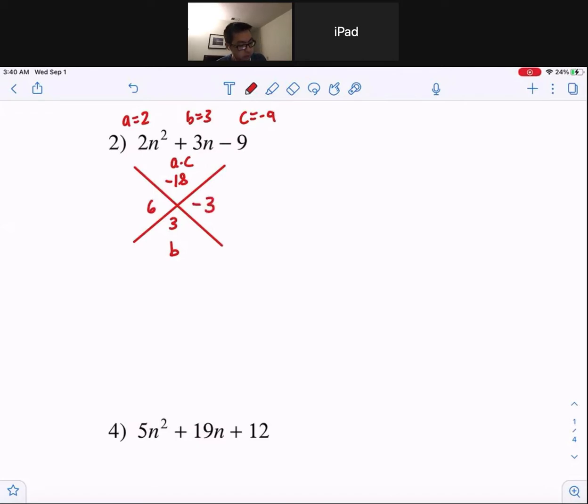Now notice everybody, a is greater than one. And if a is greater than one, then you guys have to factor this by doing the grouping method. So here's the first term, 2n squared. Remember this 3n, you have to break it off into the two numbers we just found. So it's going to be plus 6n minus 3n. Notice you guys, 6n minus 3n is positive 3n. And lastly, write your last term, which is minus 9.